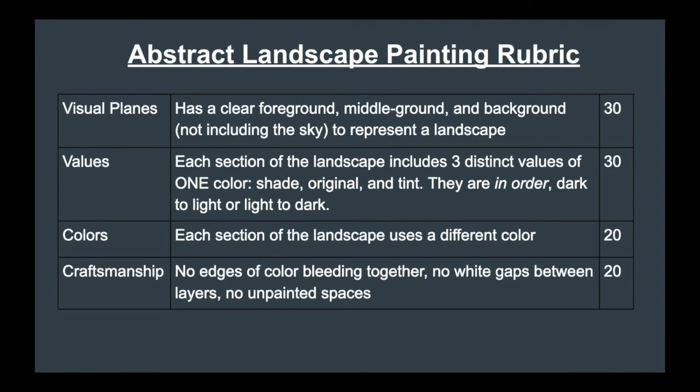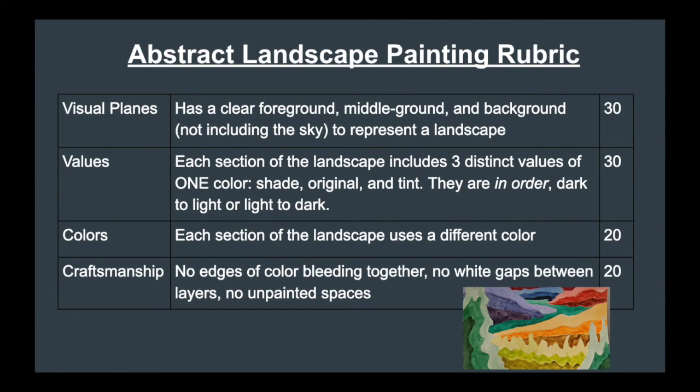So here's the rubric for this landscape painting. We've got four categories. The first one is visual planes. You need a clear foreground, middle ground, and background. And that doesn't include the sky. And all three of those parts are going to come together to represent a landscape.